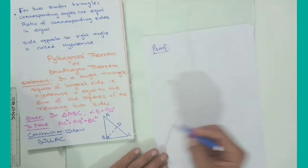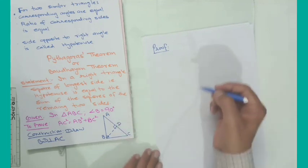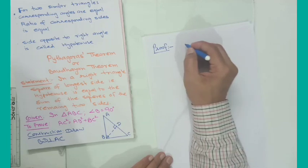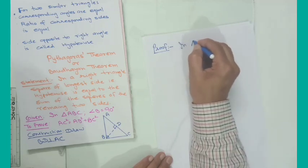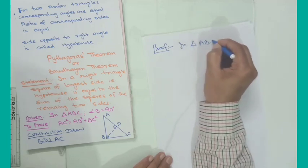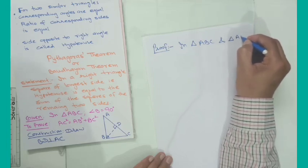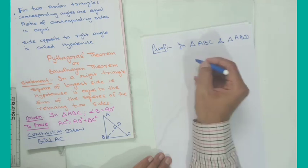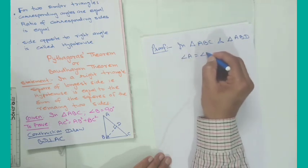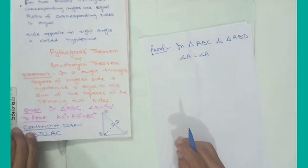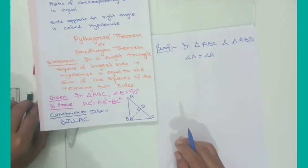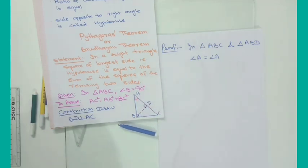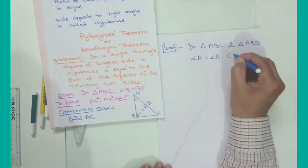In the proof, I will use the concept of similarity. First I take triangle ABC and triangle ABD. You can clearly observe here that angle A is the same in both triangles — it is common to both.